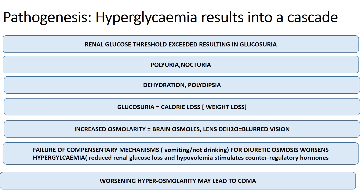The worsening osmolarity has an effect on the CNS, and up to 10% of patients with DKA will present in coma. In the liver, in the absence of insulin, there is increased ketogenesis producing ketone bodies — acetoacetate and beta-hydroxybutyrate. These are organic acids that lower the blood pH and bicarbonate concentration, stimulating the respiratory centers. Patients become tachypneic and develop acidotic breathing, known as Kussmaul's breathing.